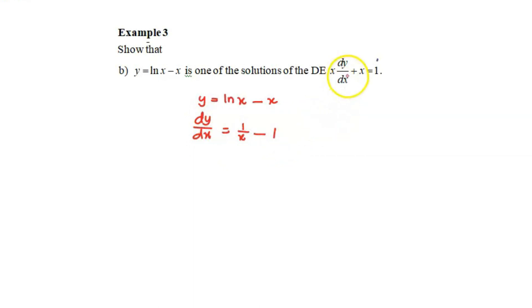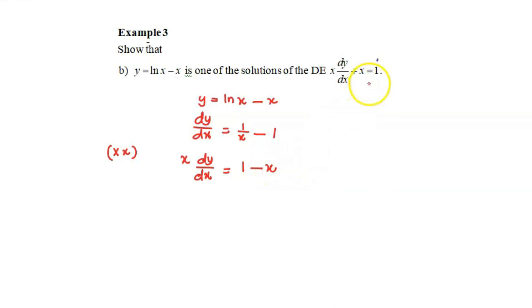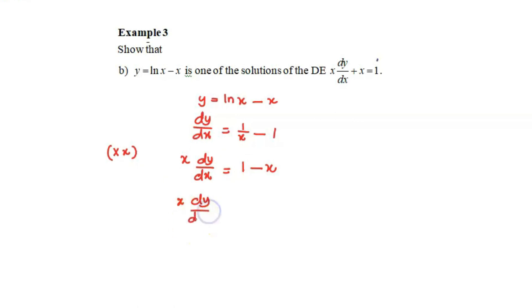Comparing to our differential equation, the term dy over dx has coefficient x. So we multiply the equation by x, giving us x dy over dx equals 1 minus x. We are almost at the solution — moving the negative x term to the left hand side gives us x dy over dx plus x equals 1.